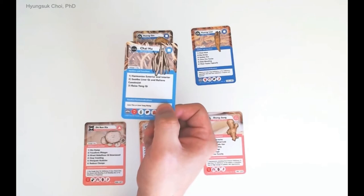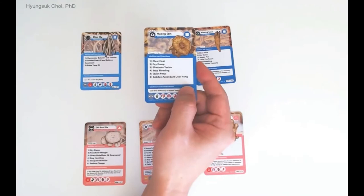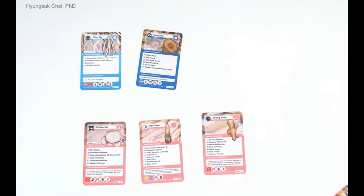Chai Hu clears heat and releases the exterior — it is just like antipyretics. And Huang Chin clears heat, subdues inflammation, and dries dampness. Huang Nian is another herb which clears heat and dries dampness, just like Huang Chin.